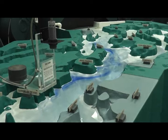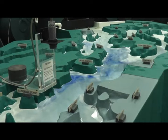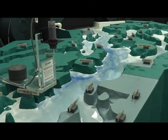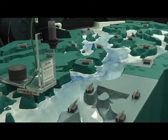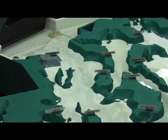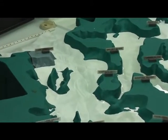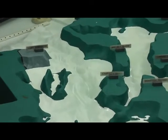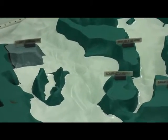This process keeps Puget Sound healthy by bringing in clean ocean water and flushing pollutants out to sea through Admiralty Inlet. Notice how shallow and rough the bottom of the Sound is in Admiralty Inlet. This shallow area is called a sill. It is a remnant of the glacial processes that created Puget Sound.